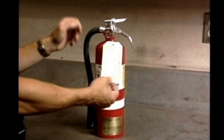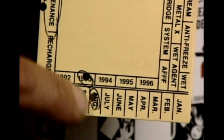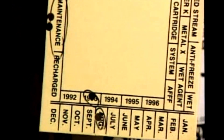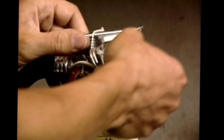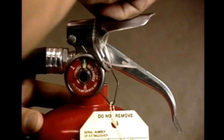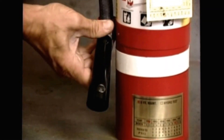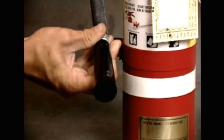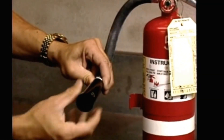Inspect serviceability by first checking the inspection tag and noting the date of the last inspection, maintenance, or recharging. Examine the lock pins and tamper seals to see if it has been actuated or tampered with. Look for any physical damage that might impair its operation. Check the discharge nozzle or horn for obstructions, cracks, or dirt accumulation.